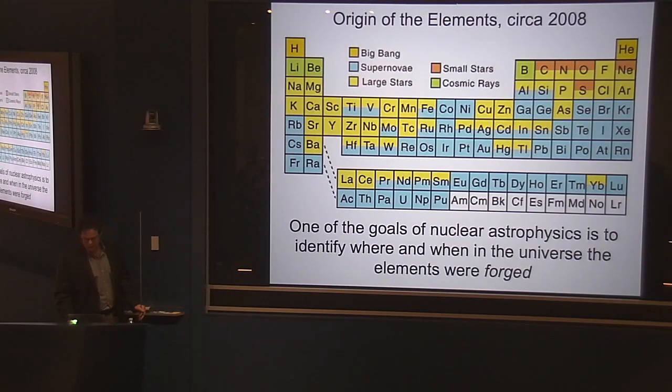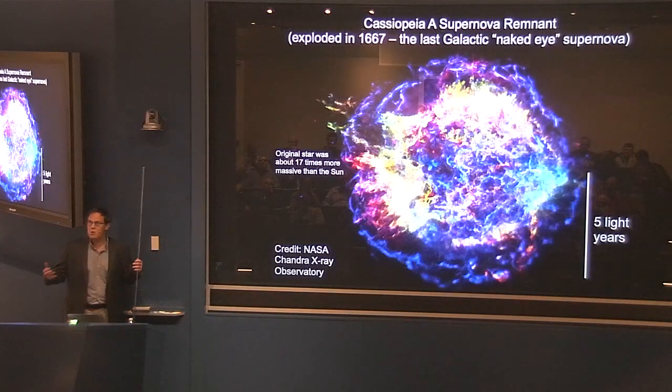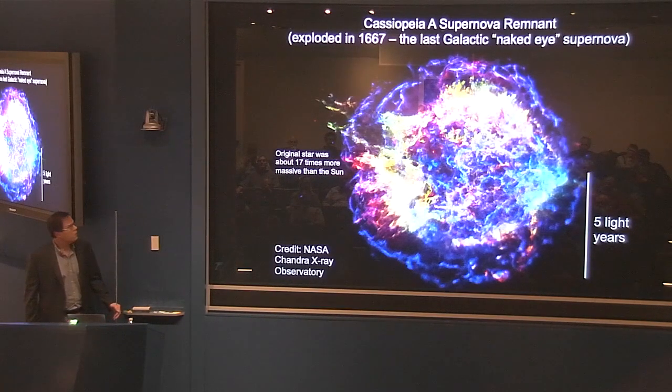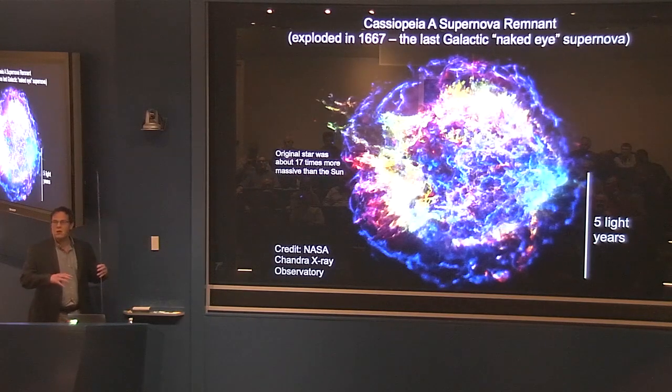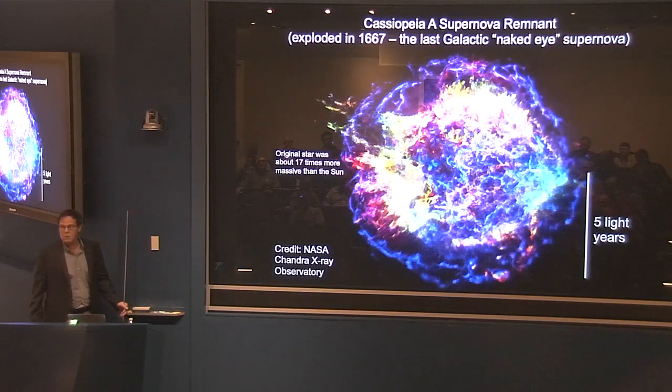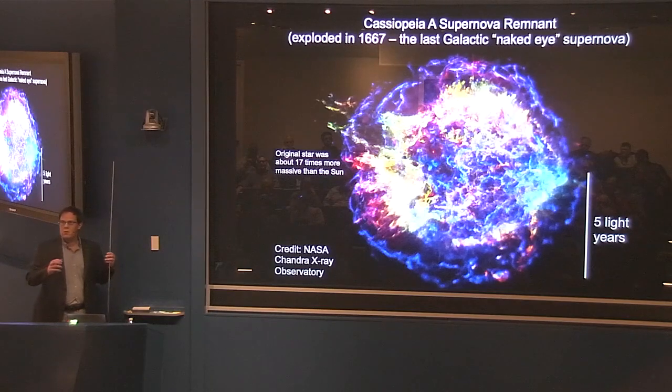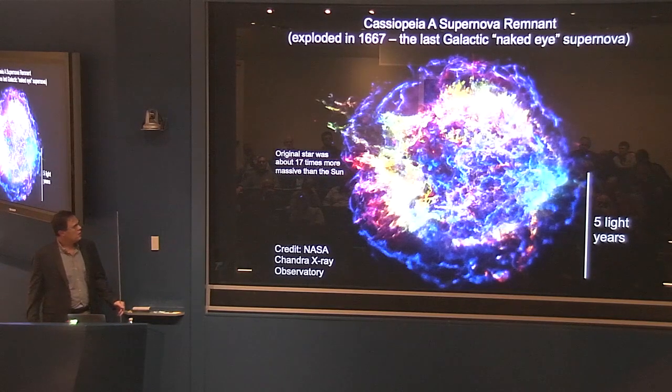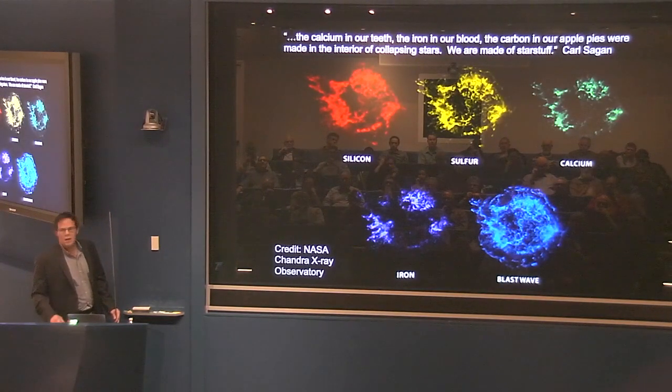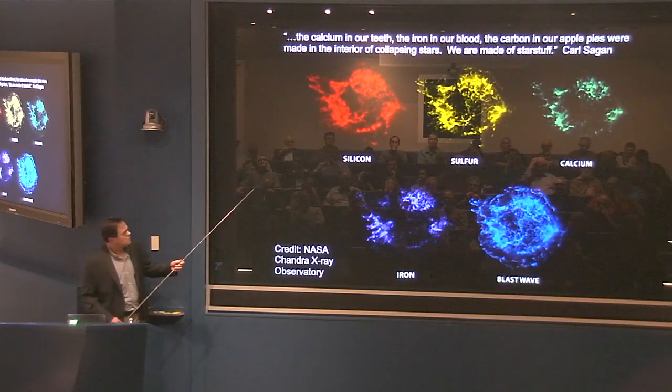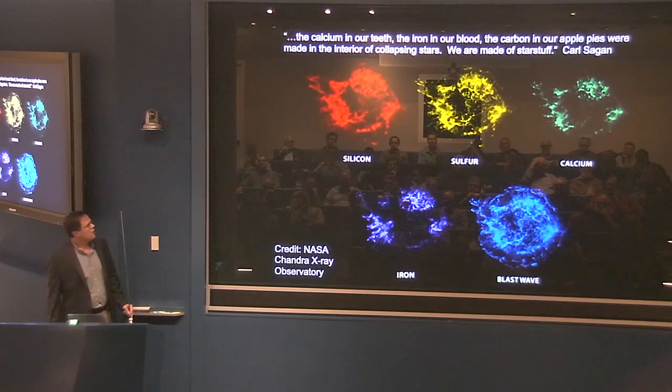And how do we know this? We can actually see it directly. We can see supernova explosions that happened in our own galaxy. This is the Cassiopeia A remnant. It exploded in about 1667. We believe that the original star that exploded was about 17 times more massive than our sun. What you're seeing here are the x-rays that are produced as the ejecta, the outer layers of the star when it exploded, collide with the interstellar medium. By looking at different colors of the x-rays, we can directly see the imprints of silicon or sulfur or calcium or iron in the ejecta of this explosion.